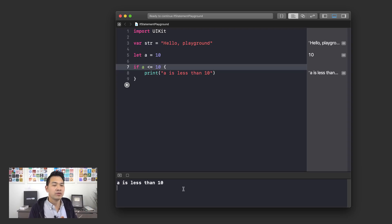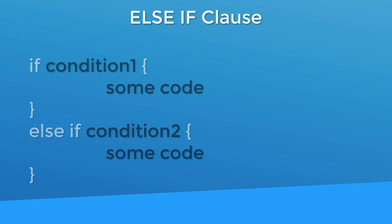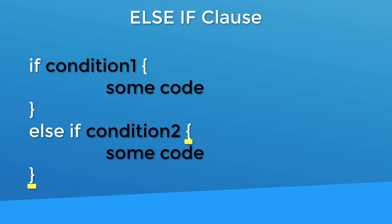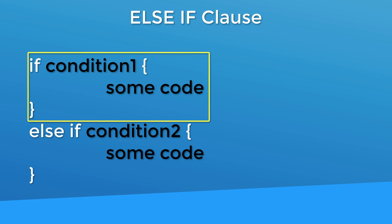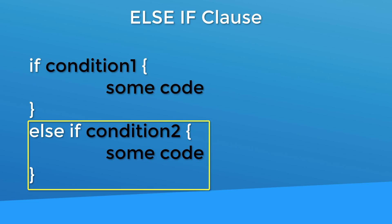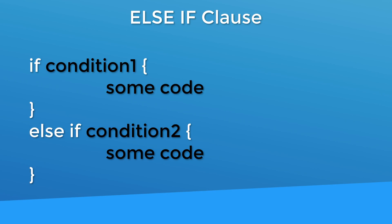Oftentimes we've got multiple choices to be made — like do you want a Big Mac or chicken McNuggets? We can handle this using another feature of the if statement called an else if clause. Right underneath the closing brace of your if statement you put the keyword else if and then another condition, followed by another set of braces. It checks your first if condition; if that's false it skips down and checks the else if condition. If that's also false it skips again. Only one branch of code will ever run.